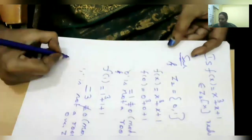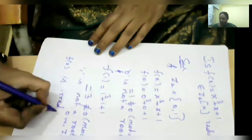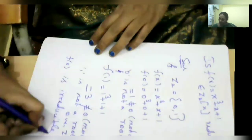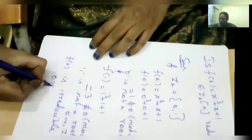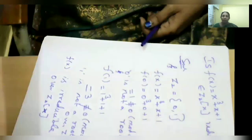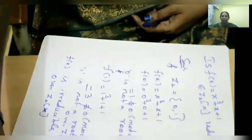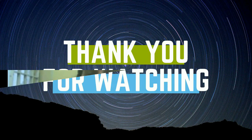Therefore f(x) has no roots over Z₂[x]. So the conclusion is: f(x) = x³ + x + 1 is irreducible over the field Z₂[x]. This is how you can conclude whether the given polynomial is reducible or irreducible, and if it is reducible, you can find the factor as well.